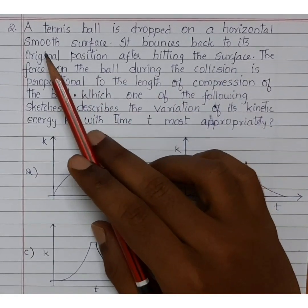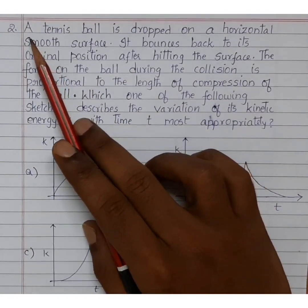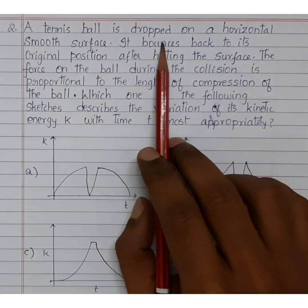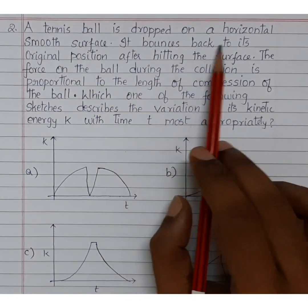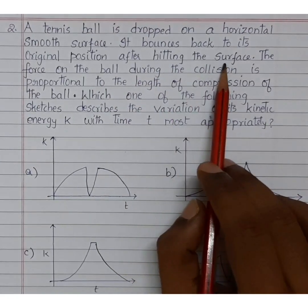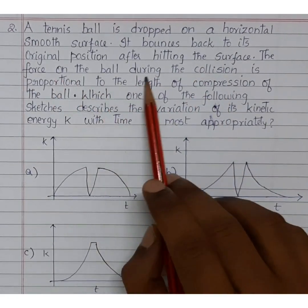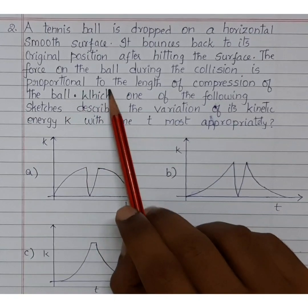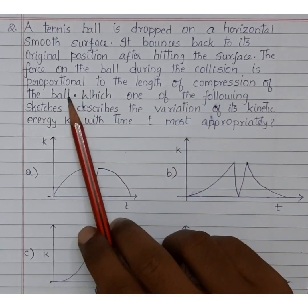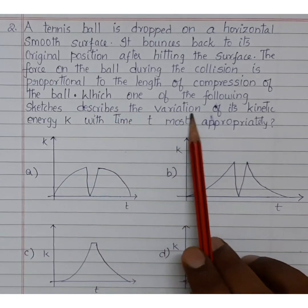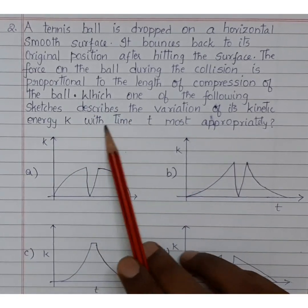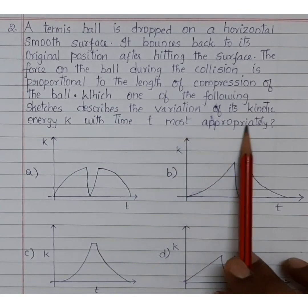This question was asked in JEE advanced exam. A tennis ball is dropped on a horizontal smooth surface. It bounces back to its original position after hitting the surface. The force on the ball during the collision is proportional to the length of compression of the ball. Which one of the following sketches describes the variation of its kinetic energy K with time t most appropriately?